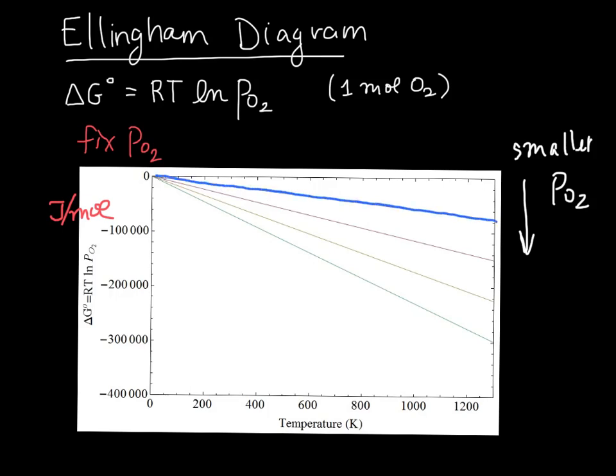Now what we can do is superimpose on here a plot for ΔG for any given reaction as a function of T. We expect that should go up like this - the ΔG of formation should be increasing with temperature. So let's take a look at an example of that.